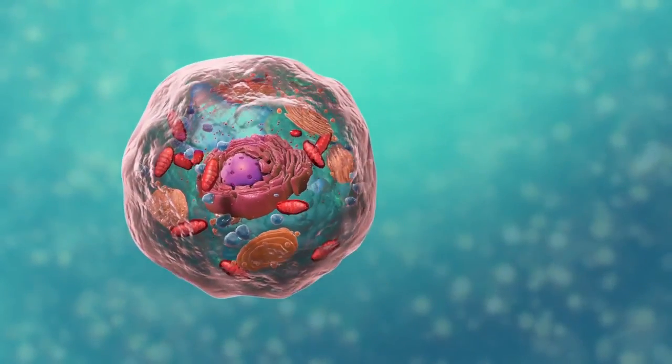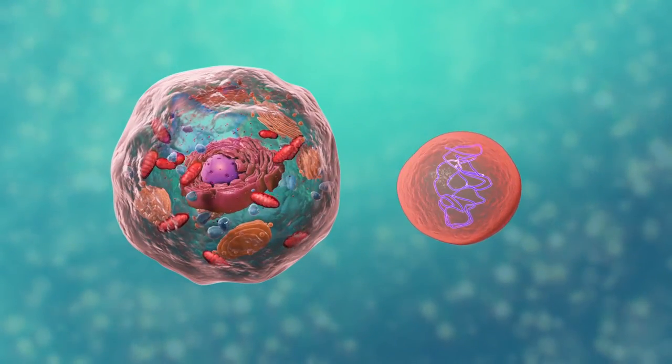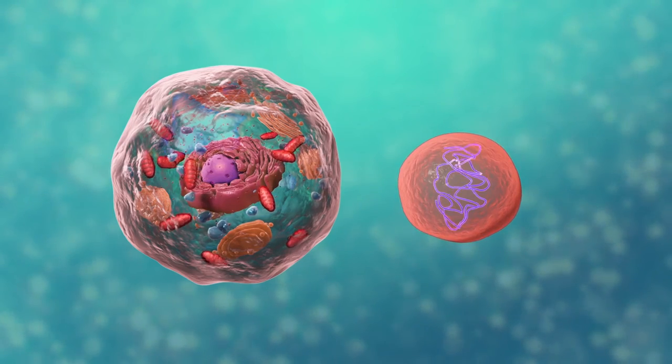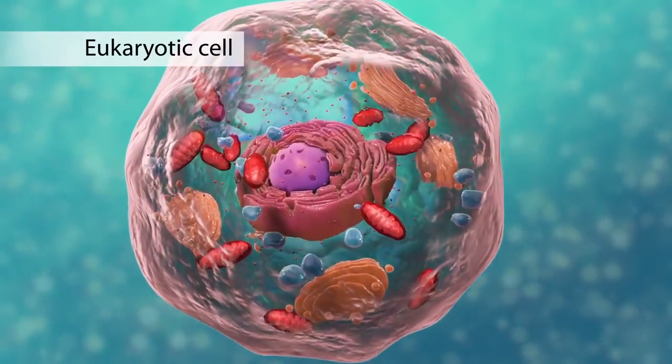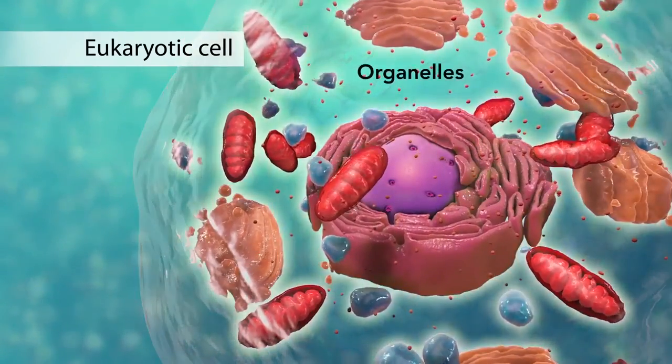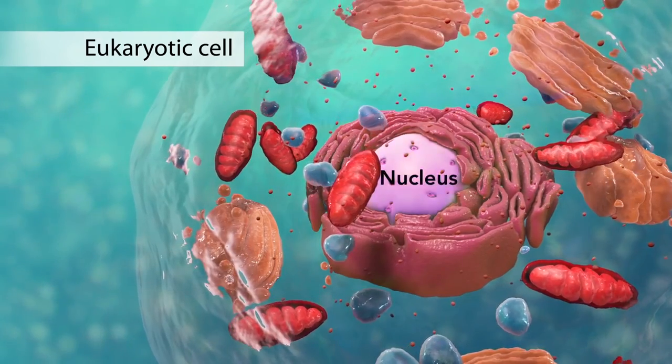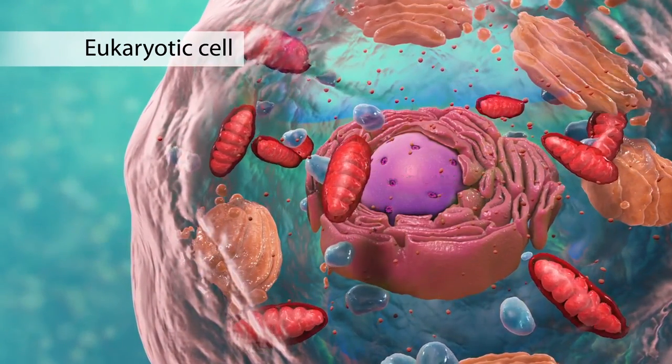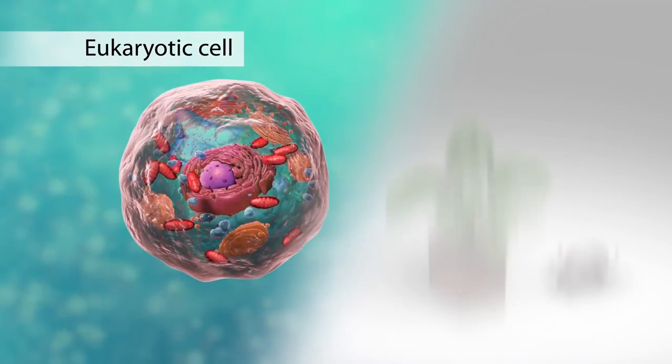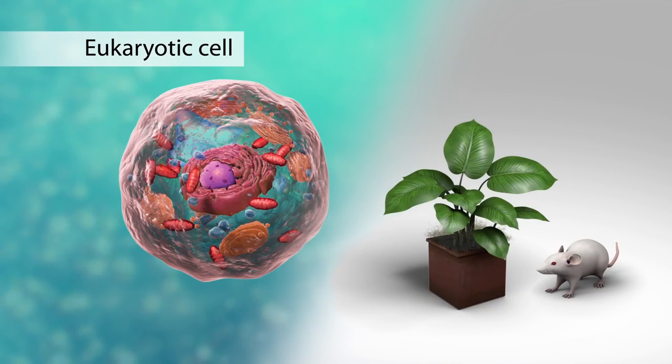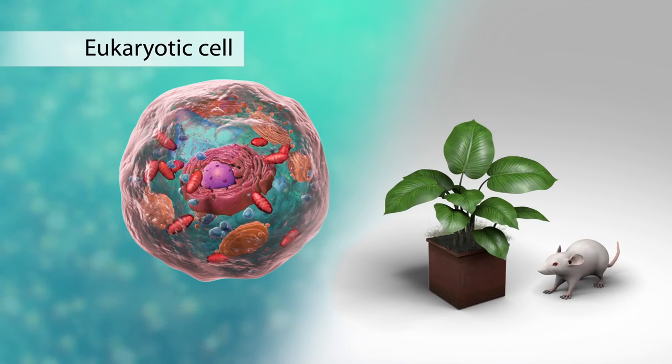There are two broad categories of cells. The first category is eukaryotic cells. They have organelles which include the nucleus and other special parts. Eukaryotic cells are more advanced complex cells such as those found in plants and animals.